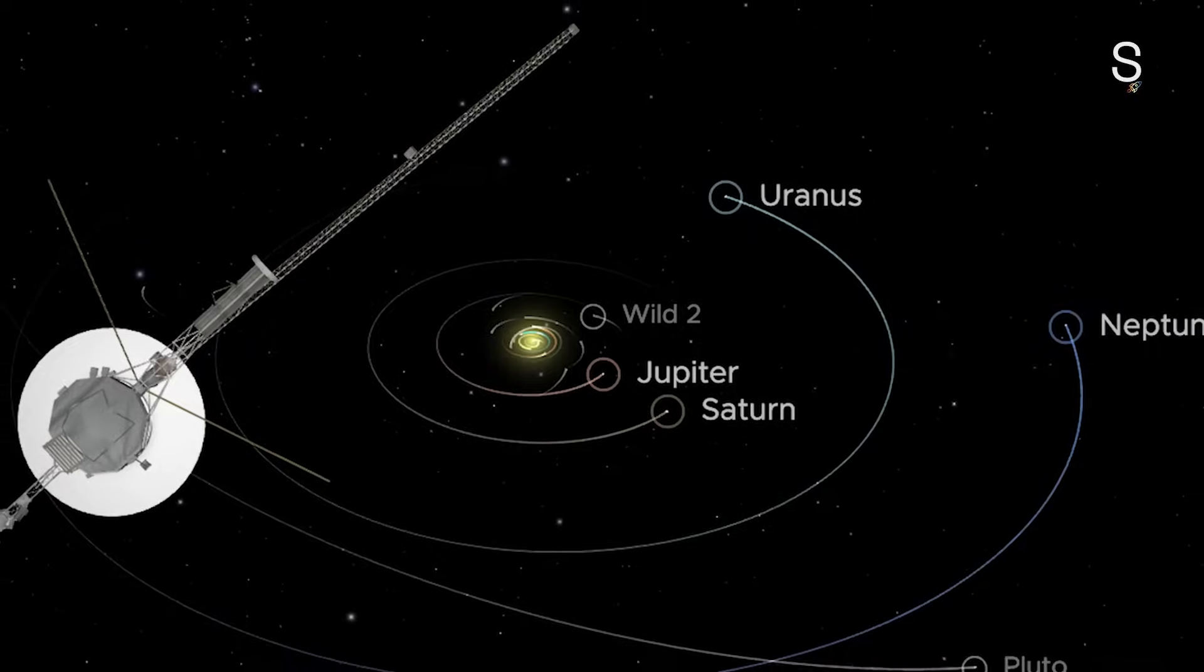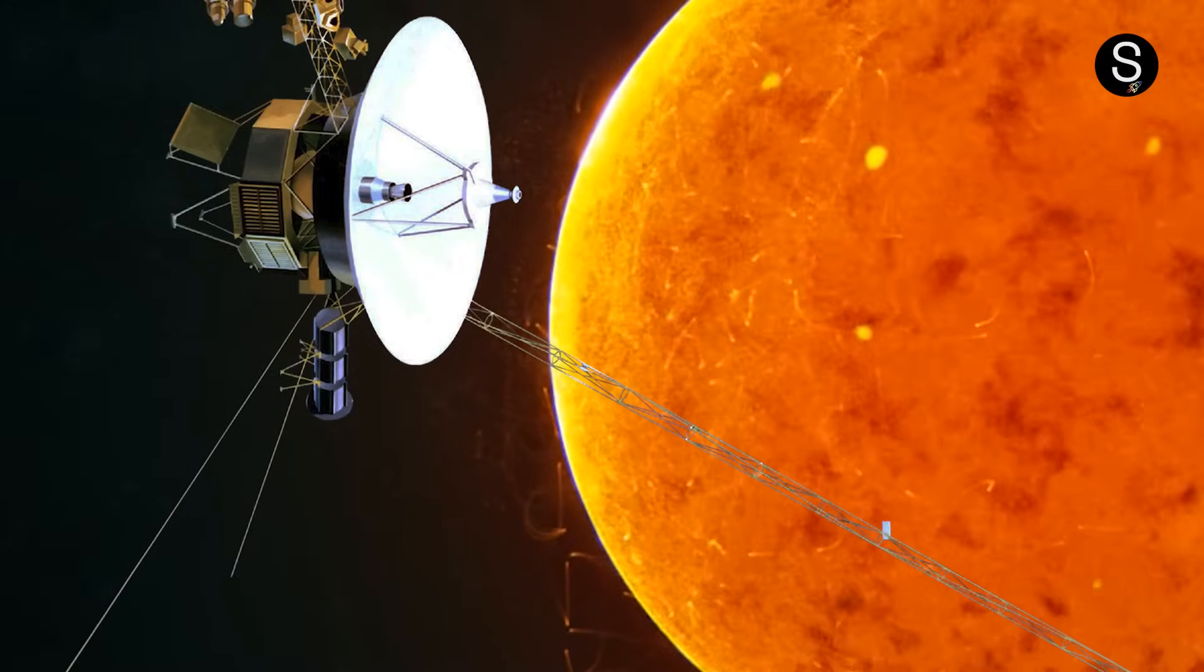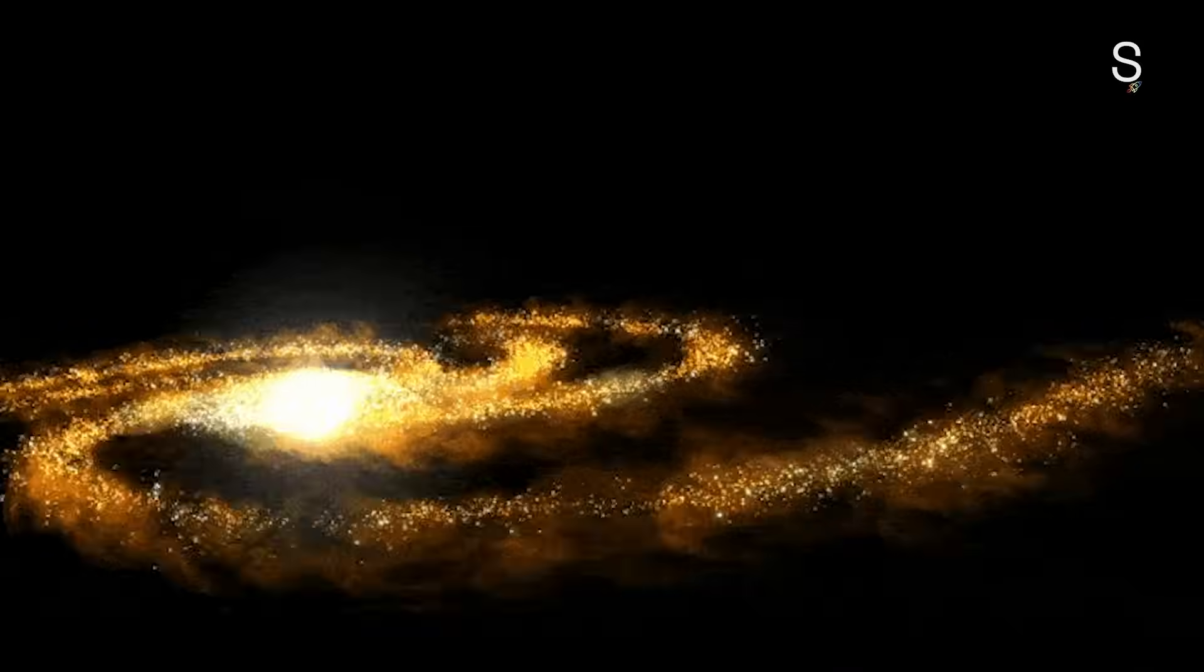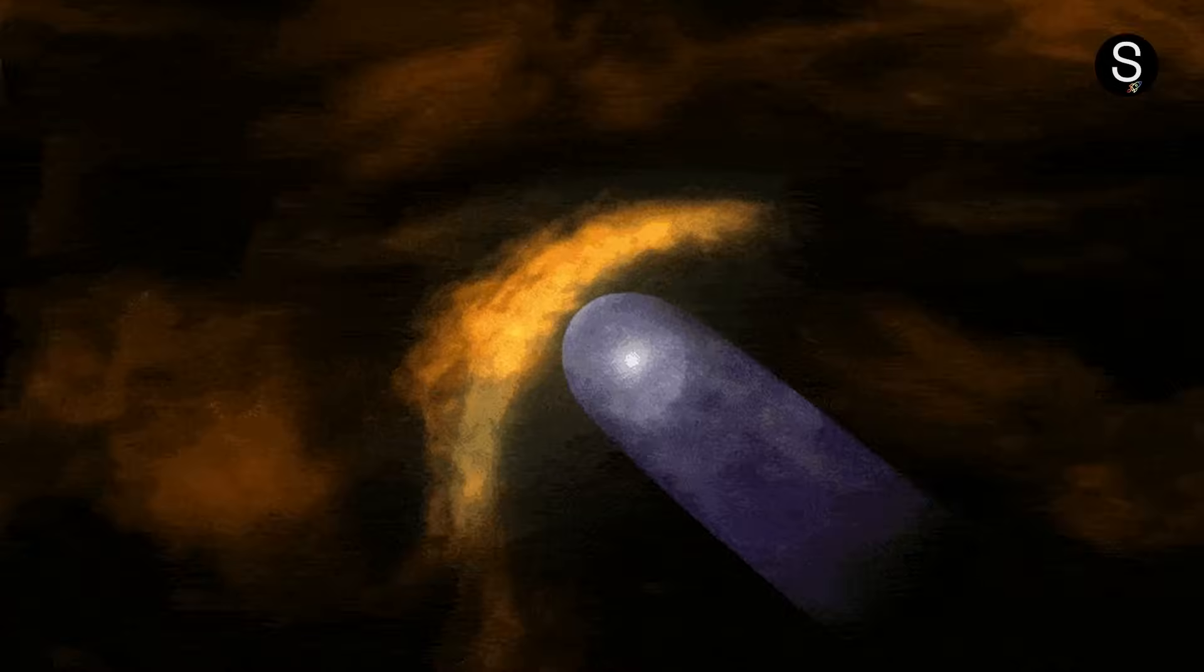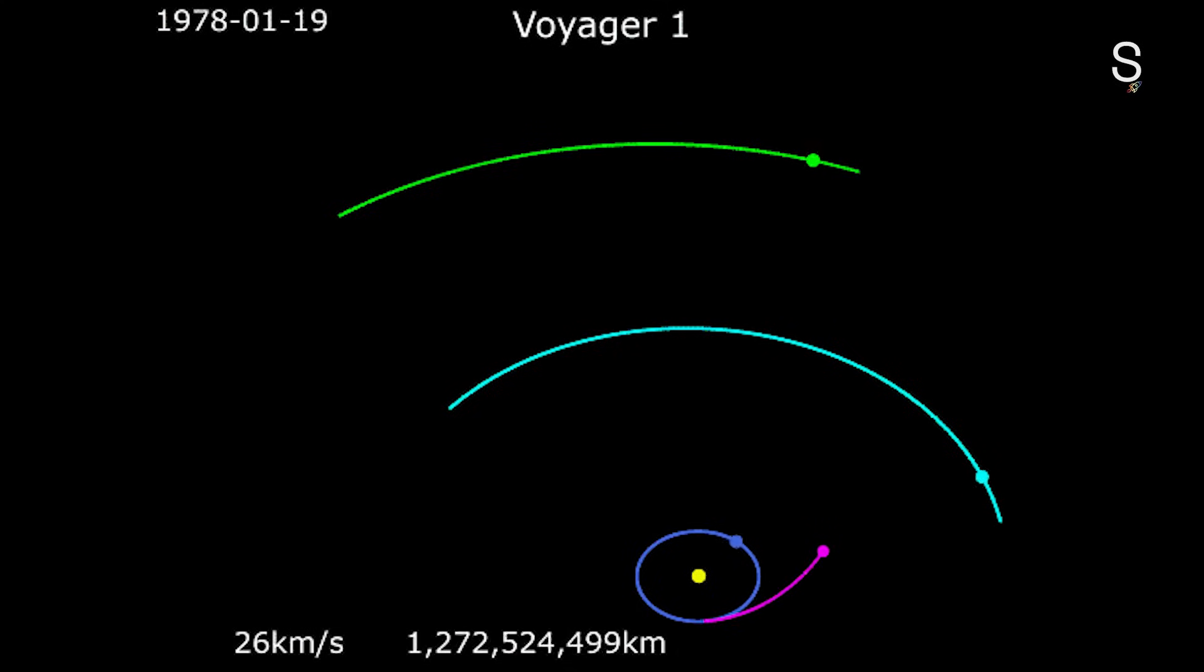When Voyager 1 made a startling discovery, the scientific community was startled. It discovered a significant decrease in the amount of particles originating from the sun while increasing the number of high-energy particles originating from outside our solar system. This meant that Voyager 1 had entered interstellar space.